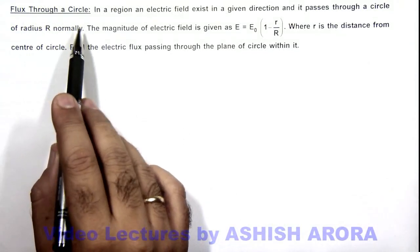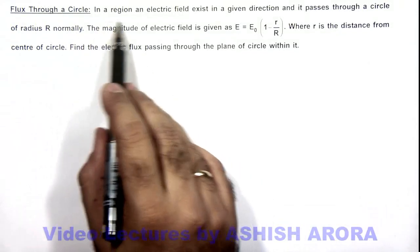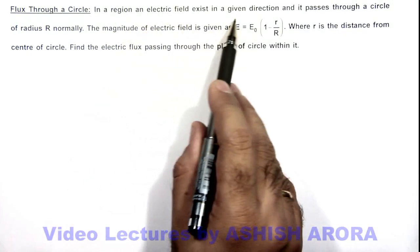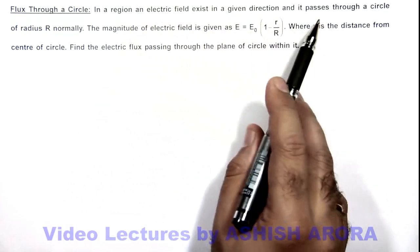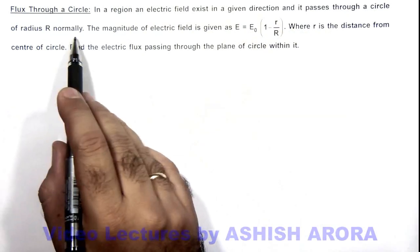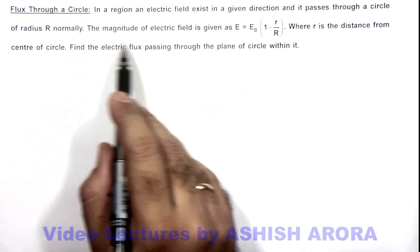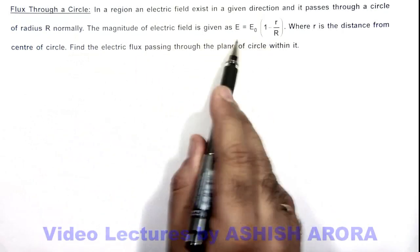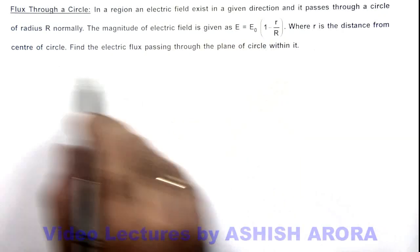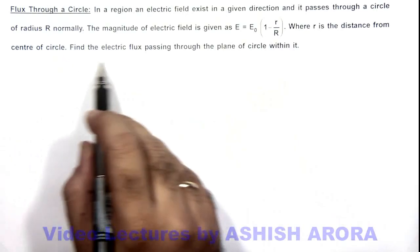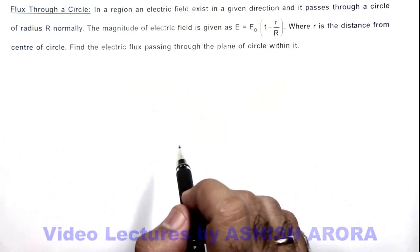Here the illustration is asking us that in a region, an electric field exists in a given direction and it passes through a circle of radius R normally. The magnitude of electric field is given by E = E₀(1 - r/R), where r is the distance from center of circle, and we are required to find the electric flux passing through the plane of circle within it.